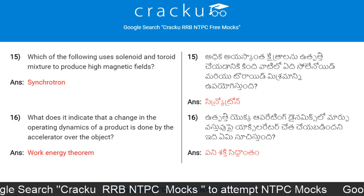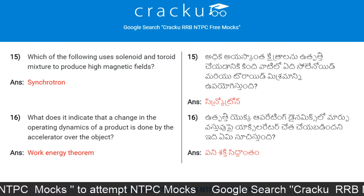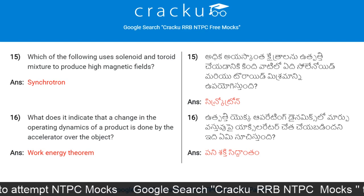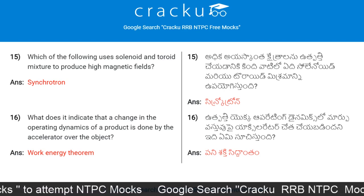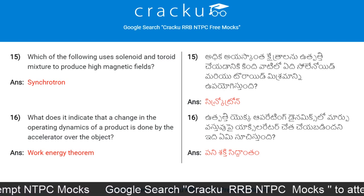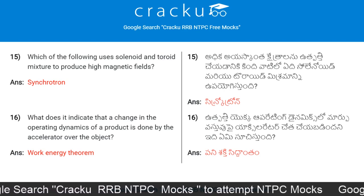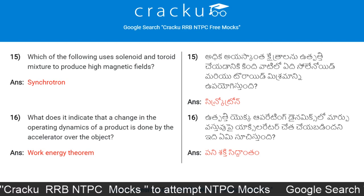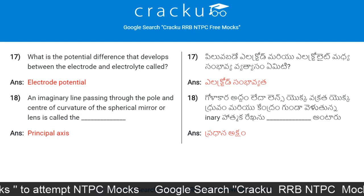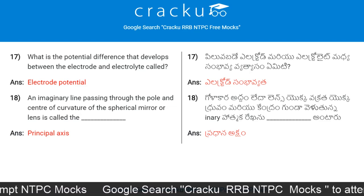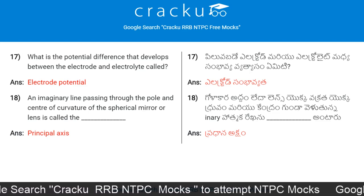Which of the following uses a solenoid and toroid mixture to produce high magnetic fields? Synchrotron. What does it indicate when a change in the operating dynamics of a product is done by the accelerator over the object? Work-energy theorem. What is the potential difference that develops between an electrode and electrolyte called? Electrode potential.